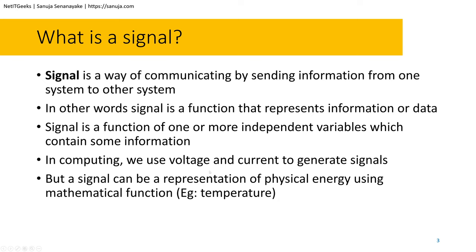In computing, we can use voltage and current to generate signals. For example, a digital signal uses plus or minus, up and down, or plus and zero. Plus five volts can be considered as a one, and anything below plus five volts can be considered as zero. So between zero volts and five volts it's going to be considered as zero, but as soon as the signal goes above that plus five threshold it's considered as one. In computing, we are using zeros and ones.